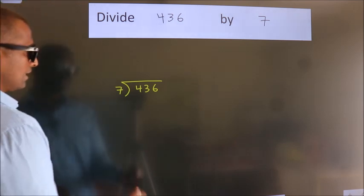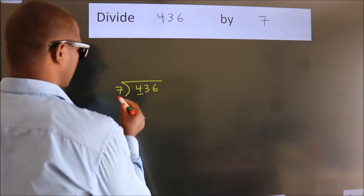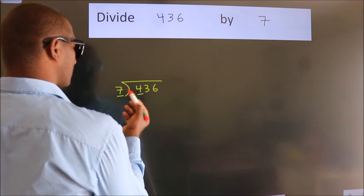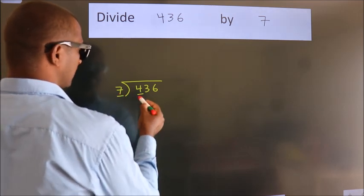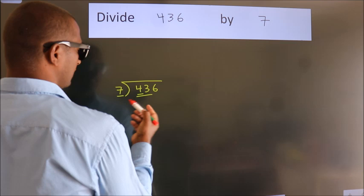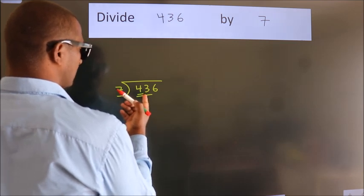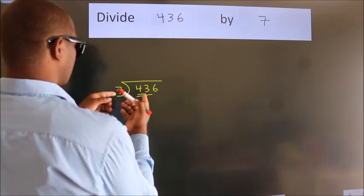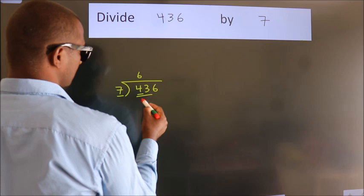Next, here we have 4, here 7. 4 smaller than 7. So, we should take two numbers, 43. A number close to 43 in 7 table is 7, 6, 42.